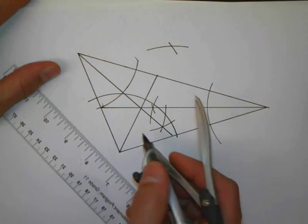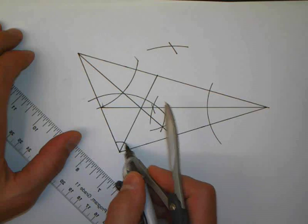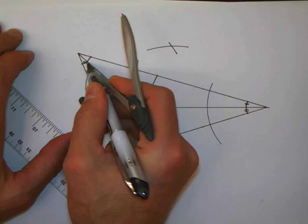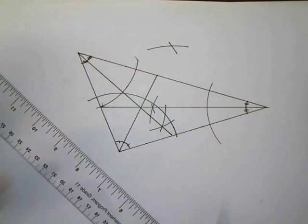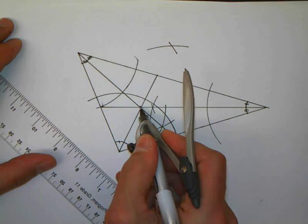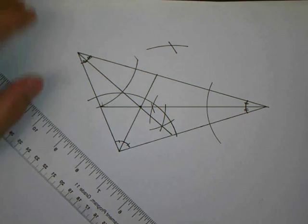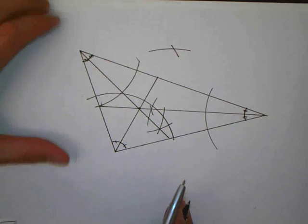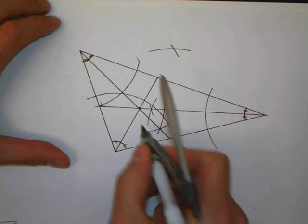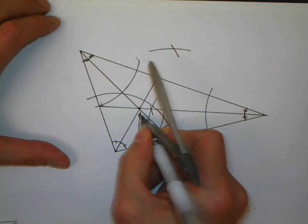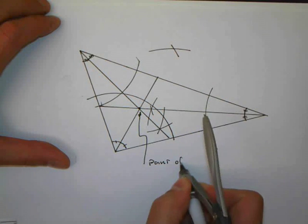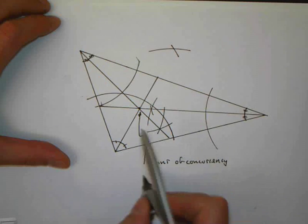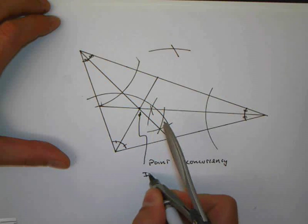So these are my three angle bisectors. One here, one there, and one up there. They meet at a single point. Depending on how well you do the construction, the accuracy of that point varies. This is known as a point of concurrency. Three or more lines meeting at a single point. And this is known as the incenter of the triangle.